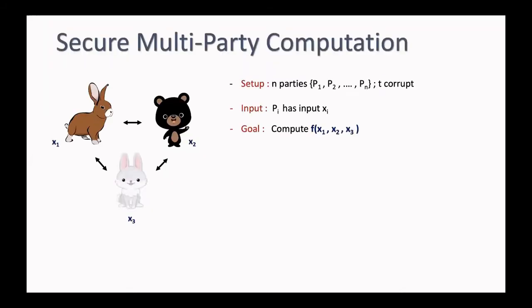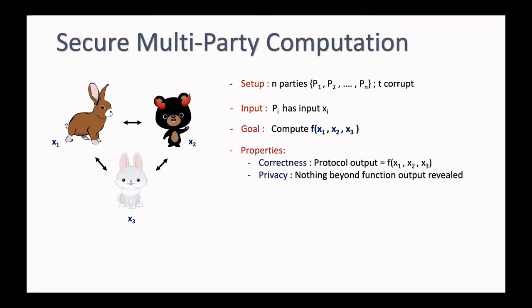What is an MPC protocol? It's a protocol between multiple parties, each of them has some inputs, and they want to compute some function. Completeness ensures us that if the parties behave honestly, then they will recover the output of the function. But some parties may be malicious, and privacy tells us that nothing except the output of the computation will be learned by such a party — essentially, the input will remain private if the function allows so.